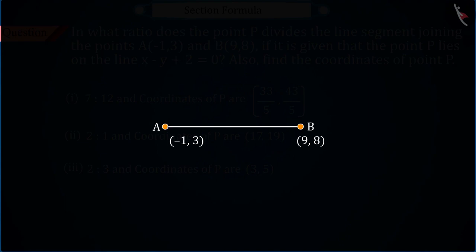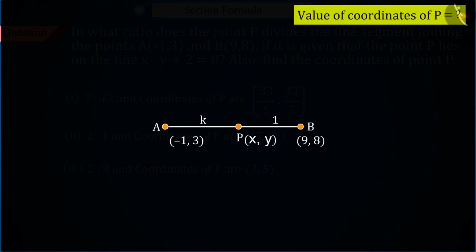Let's assume that point P divides the segment AB in K ratio 1. So can you find the values of coordinates x, y of P?